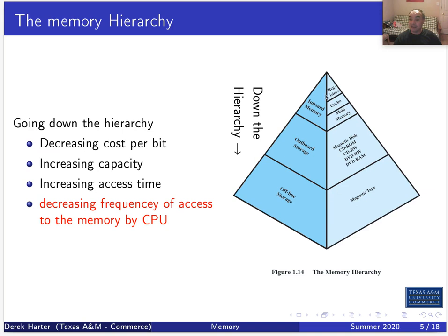Registers are a type of memory right on the CPU. They're extremely expensive — high cost per bit — and very small, typically on the order of 10 to 100 registers on your CPU, but they're very fast. If you go down to cache and then main memory, main memory has much bigger capacity than registers but is much slower. In fact, it's about an order of magnitude slower to go from register to cache, and then another order of magnitude slower to go from cache to main memory — so it's 10 times slower in terms of access time at each step.